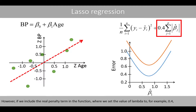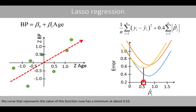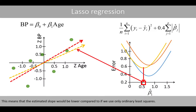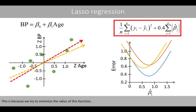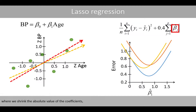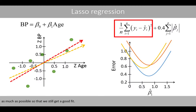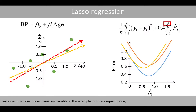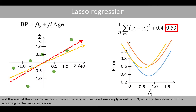However, if we include the real penalty term in this function and set the value of lambda to, for example, 0.4, the curve that represents the value of this function now has a minimum at about 0.53. This means that the estimated slope would be lower compared to if we used only ordinary least squares. This is because we try to minimize the value of this function, where we shrink the absolute values of the coefficients as much as possible while still getting a good fit. Since we only have one explanatory variable in this example, p is equal to 1, and the sum of the absolute values of the estimated coefficients is simply equal to 0.53, which is the estimated slope according to the LASSO regression.